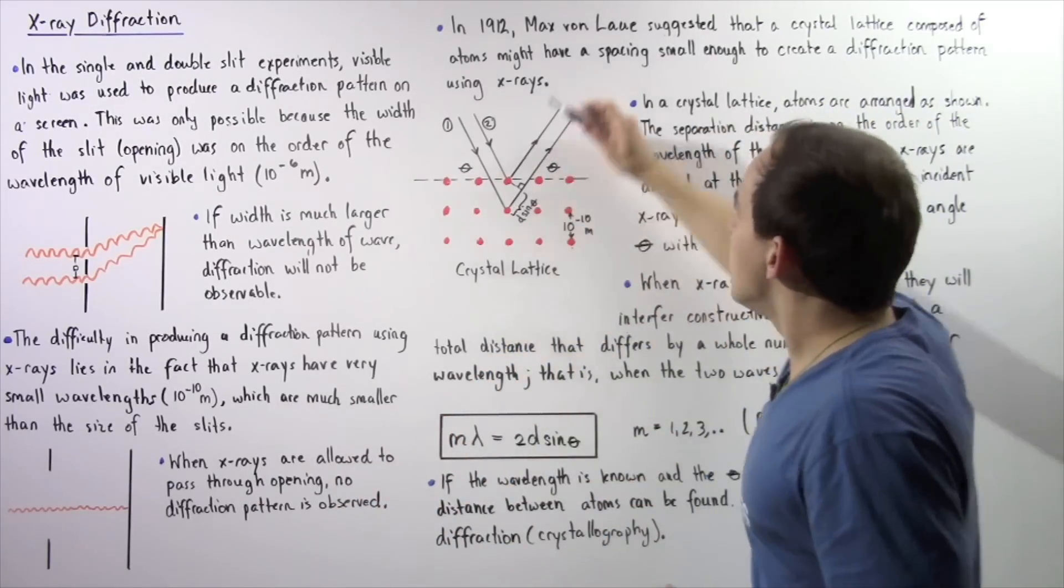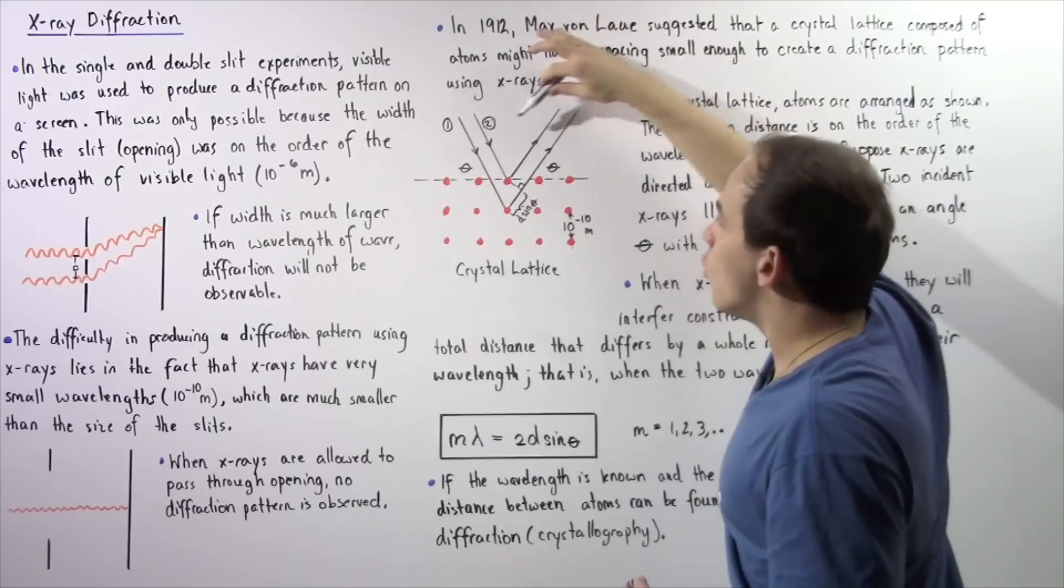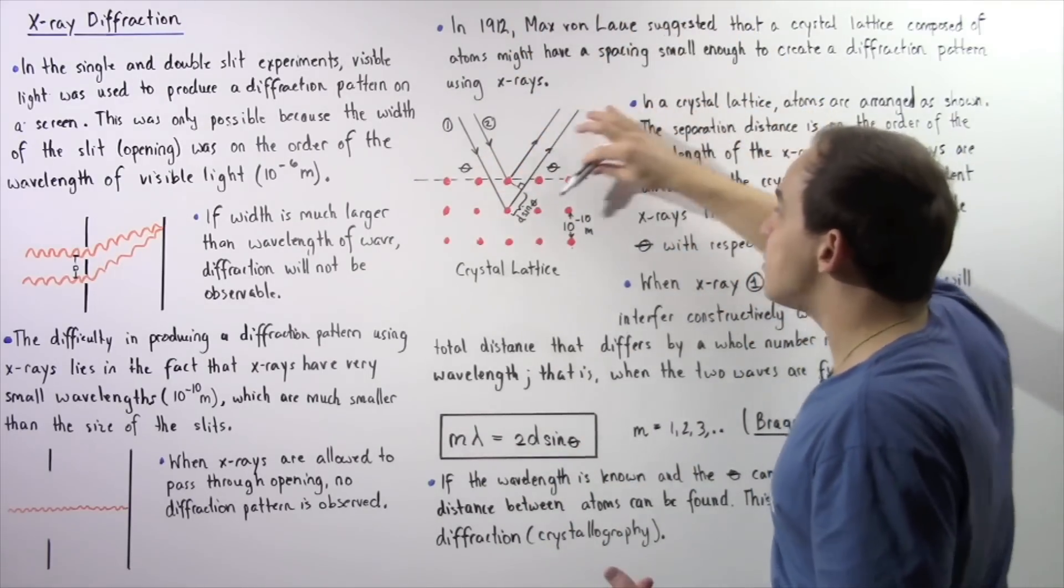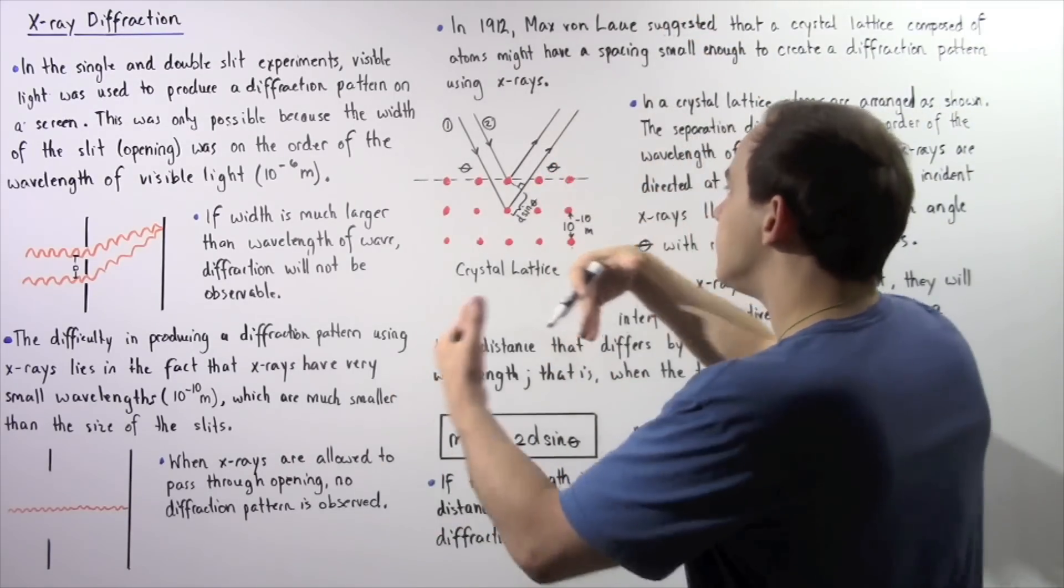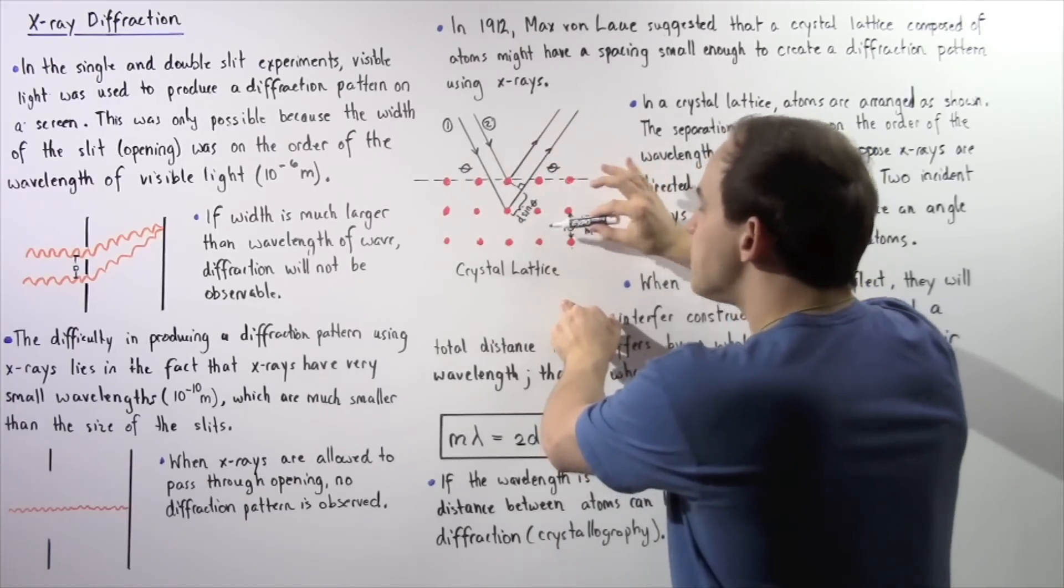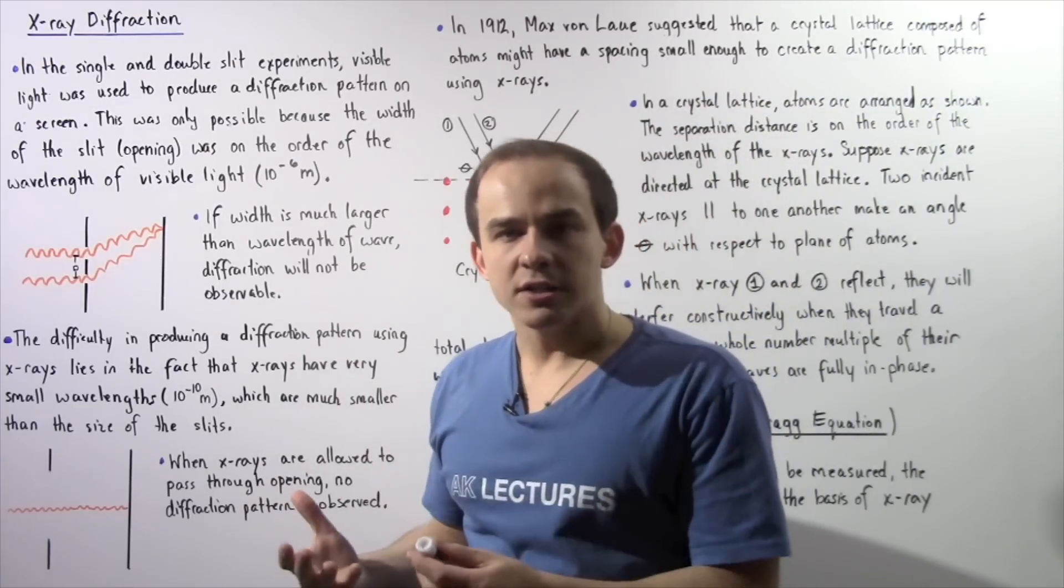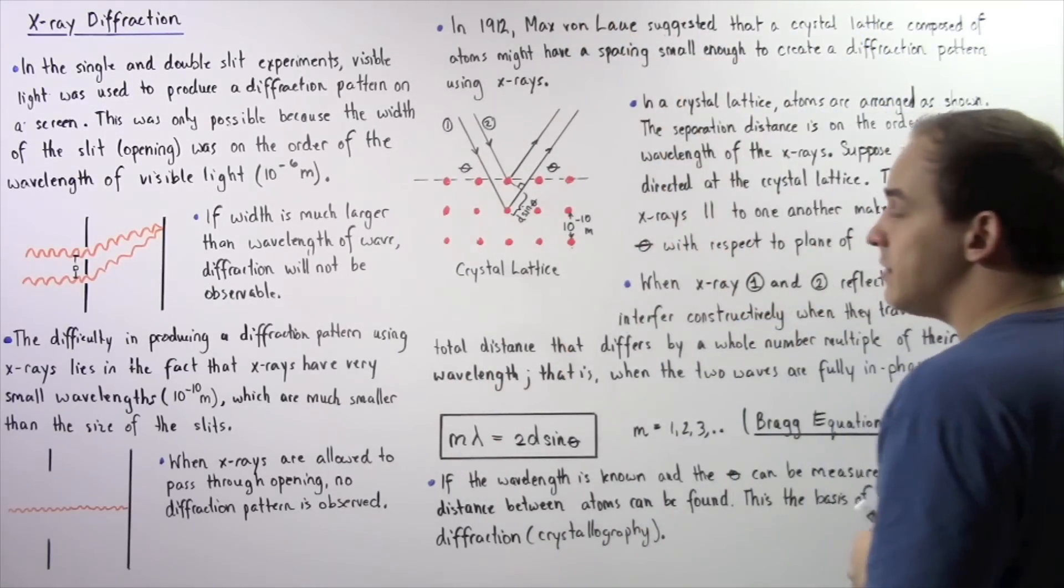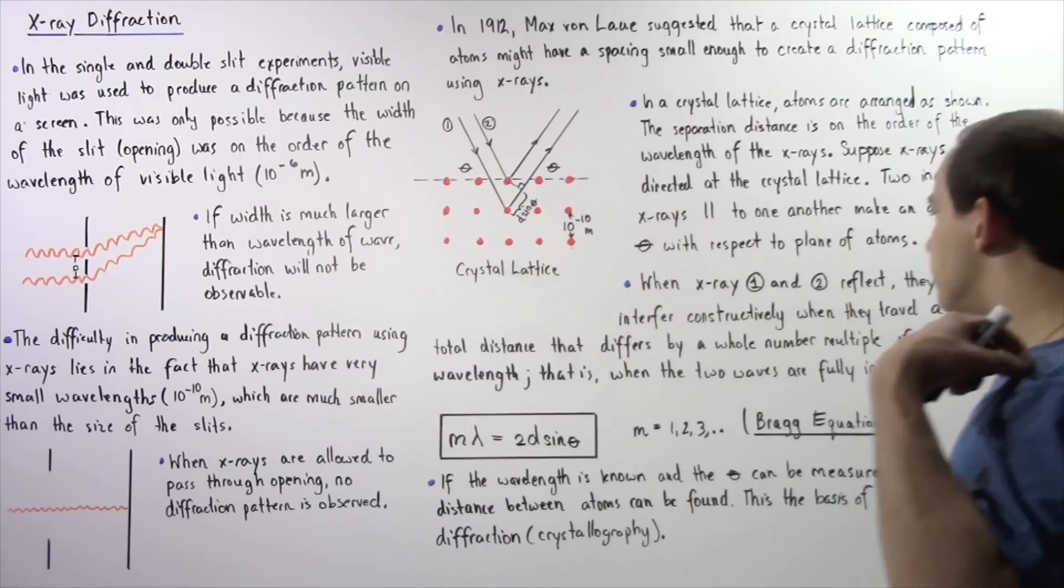Basically, notice, let's suppose we have the screen somewhere here. This upper wave, wave number two, will travel less than this lower wave, and that lower wave will travel a distance of D sin theta less. If this is equal to a whole number multiple, then that basically means they will interfere constructively and form bright fringes on some viewing screen in the same way that bright fringes were formed in the double slit experiment.